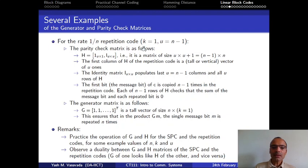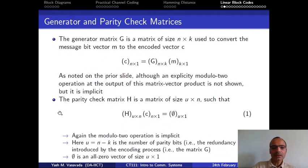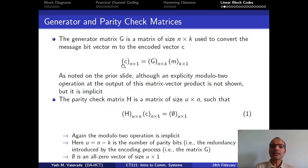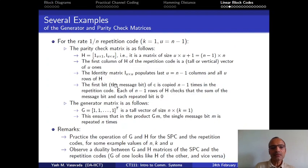Because k is equal to 1, the message vector m is nothing but one bit — either 0 or 1 — it is just 1×1. G is n×1 and all ones. When you multiply G with m, you get c, which is n replicas of m. If m is 0, you get n zeros; if m is 1, you get n ones. So the generator matrix G for the repetition code ensures that G times m replicates the single message bit m exactly n times.